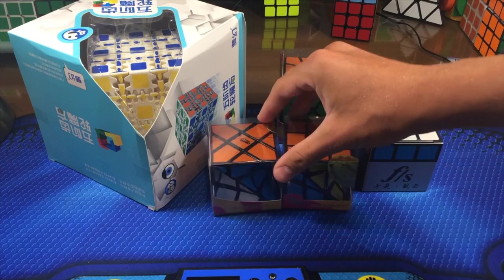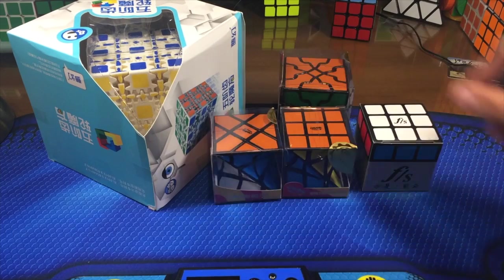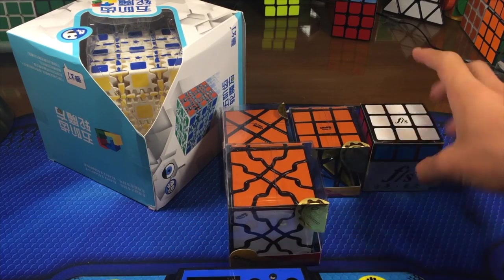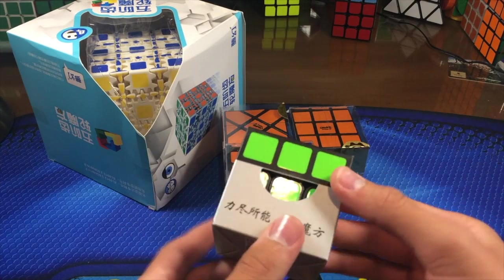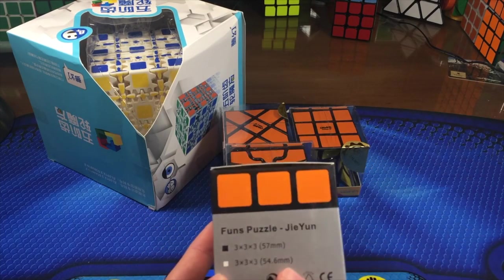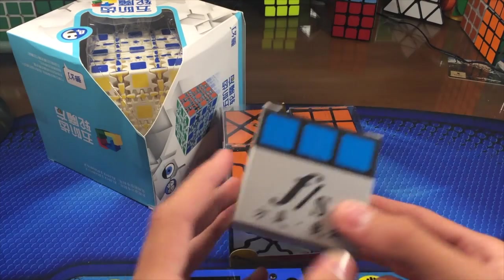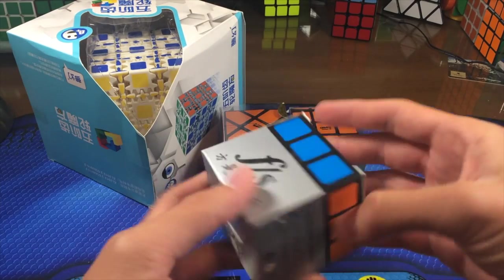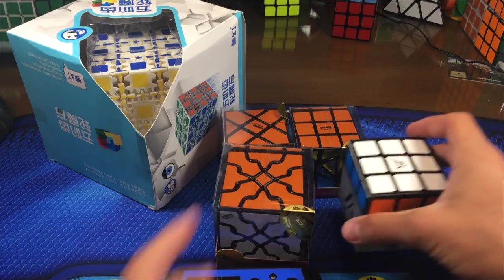Then here we have the two twist cubes, we have the regular one and the Fisher. Here we have the Curvy Dino, and then here we have the new Feng Shui Ji-Yun. I'm not sure if that's how you pronounce it, but it looks like it will be coming in a smaller size, 54.6, just like the Feng Shui Illusion that they came out with. But anyways, let's get into all of these.